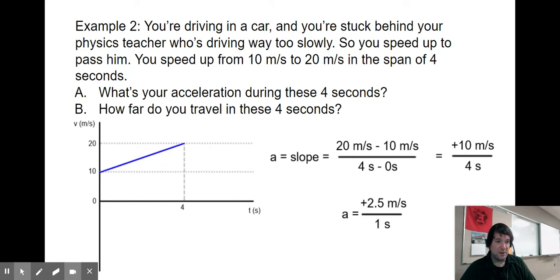Positive 10 meters per second because we're increasing in velocity. In example one we had a negative acceleration when velocity was decreasing. Here we have a positive acceleration as velocity is increasing.